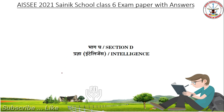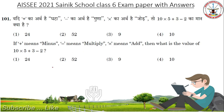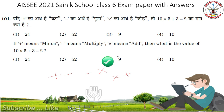Now Section D: Intelligence. If you like this video, please subscribe. Plus means minus, minus means multiply, multiply means add. Then what is the value of 10 into 5 plus 3 minus 2? Pause the video and do the calculation. Answer: Nine.